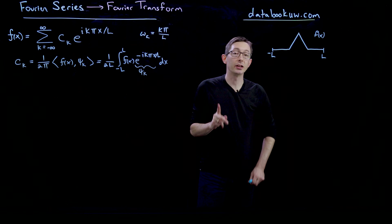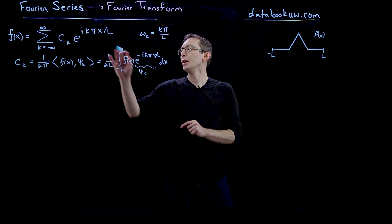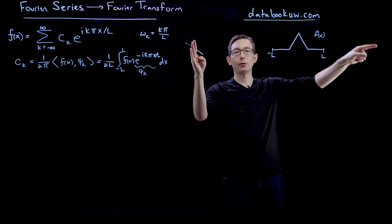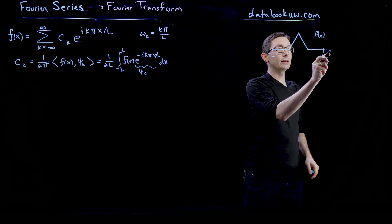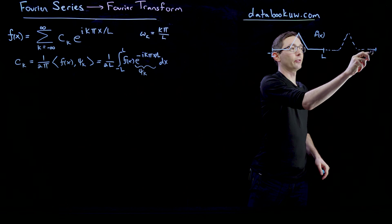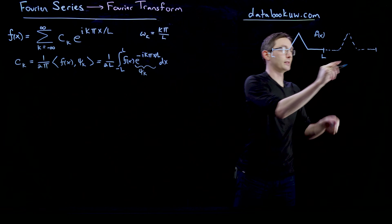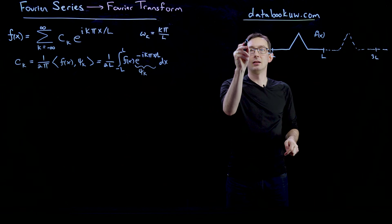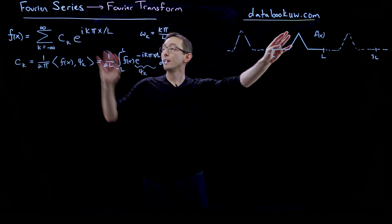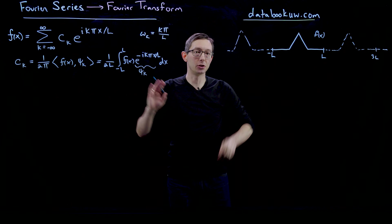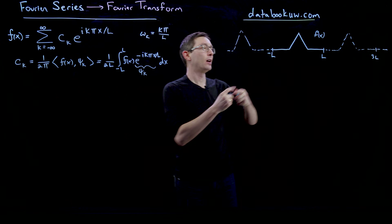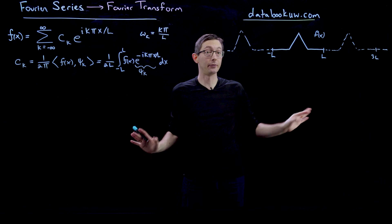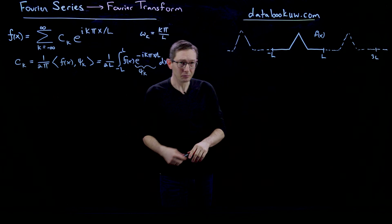I want to point out that because each of these functions is 2L-periodic, if you look to the left or to the right of minus L and L, this function will repeat itself forever — so at 3L, 5L, negative 3L, and so forth. This Fourier series representation is 2L-periodic, so essentially what it does is give you a tiling of f(x) defined from minus L to L, repeating itself every 2L to the left and to the right forever.